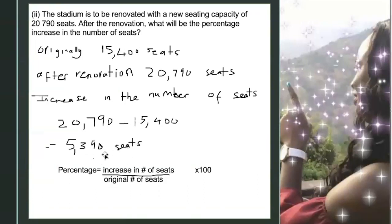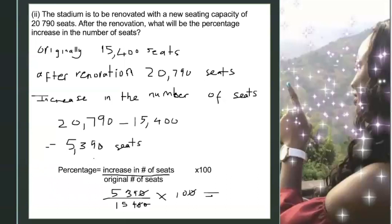Now we find the percentage increase. The formula is: increase in number of seats over the original number of seats, multiplied by 100. So that's 5,390 over 15,400, times 100. We can cancel zeros — those two zeros and this zero cancel — so we enter 539 divided by 154 in the calculator, then multiply by 10, giving us 35%. Alternatively, enter 5,390 divided by 15,400 and multiply by 100 to get the same answer: 35%.